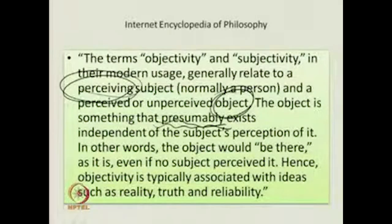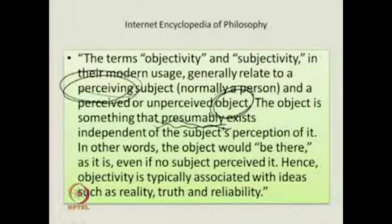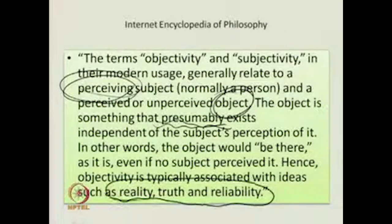In philosophy, we have the whole debate about whether there is a reality out there outside of our perception. Objectivity is typically associated with ideas such as reality, truth, and reliability. But as we saw in our last lecture, this is a problematic issue, since reality, truth, and reliability as something being outside of us is a very contentious issue. Post-structuralism would say that these are linguistic creations — we perceive the world as a particular subject through our discourses, and discourses are ultimately linguistic exercises.